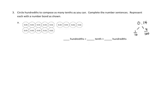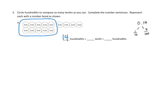Problem three asks us to do a different exercise. We're going to circle hundredths to compose as many tenths as you can, then complete the number sentences and represent each with a number bond. First of all, how many hundredths are there in these discs? Counting them up, we have fourteen hundredths. Can we group ten of these and make a tenth? Yes — we'll bundle ten of them together. Those ten hundredths make us one tenth, and that leaves us with just four hundredths remaining. So fourteen one-hundredths is the same as one tenth and four hundredths.